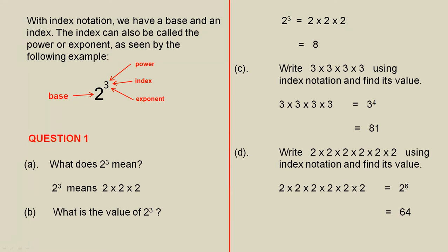With index notation, we have a base and an index. The index can also be called the power or exponent, as seen by the following example. Here we have 2 to the power of 3. 2 is called the base, and 3 can be called the power or the index or the exponent.